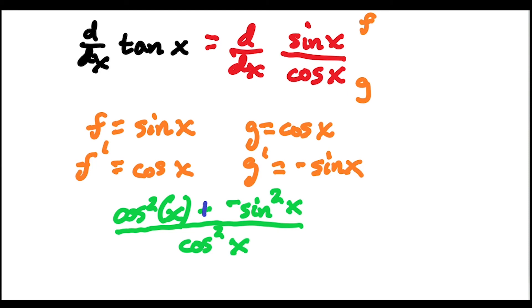Now this minus minus just becomes a plus. Cosine squared x plus sine squared x is actually equal to one, if you remember from your trig properties, and we're dividing this by cosine squared x.